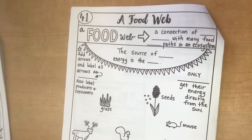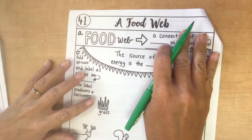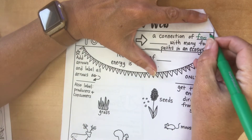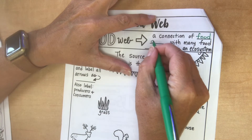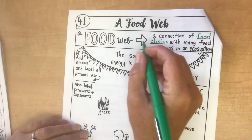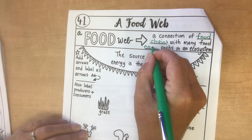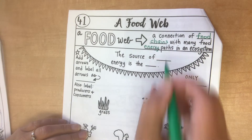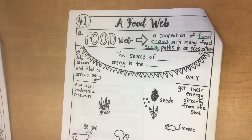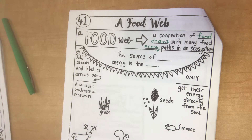Okay, so today we're going to talk more about food webs. A food web is a connection of food chains with many food energy paths in an ecosystem.